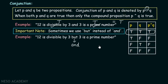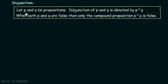Now let's consider our third operator: the disjunction operator. Let p and q be propositions. The disjunction of p and q is denoted by p ∨ q — 'disjunction' means 'or,' and this is the symbol we use for it. When both p and q are false, then only the compound proposition p ∨ q is false.